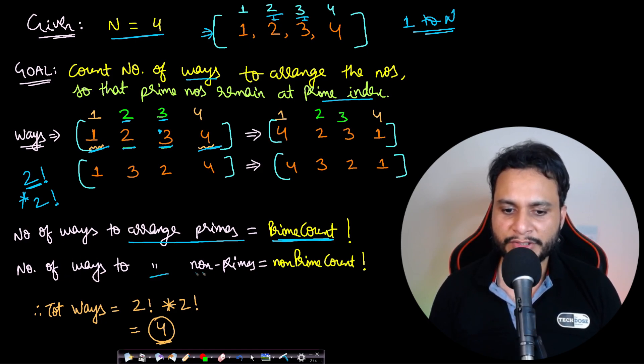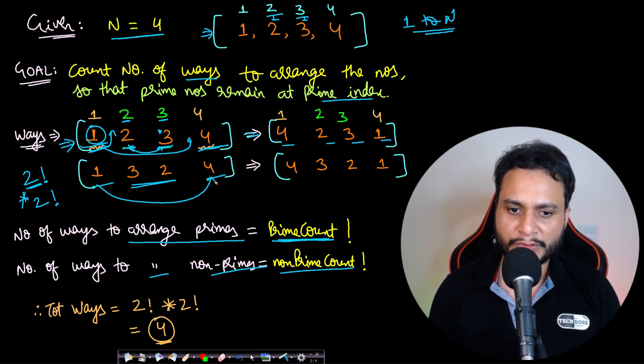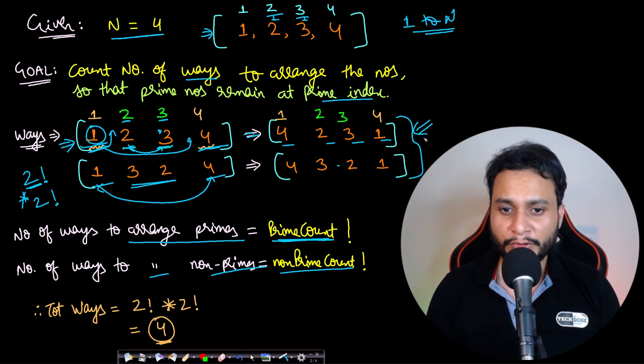A non-prime number must always go to a non-prime position, it cannot go to a prime position. A prime number must always go to a prime position. That's why we can rearrange 2 and 3 to get [1, 3, 2, 4] with the same non-prime positions. We can also swap the non-primes to get [4, 2, 3, 1] or [4, 3, 2, 1]. So you should return the answer equals to 4.